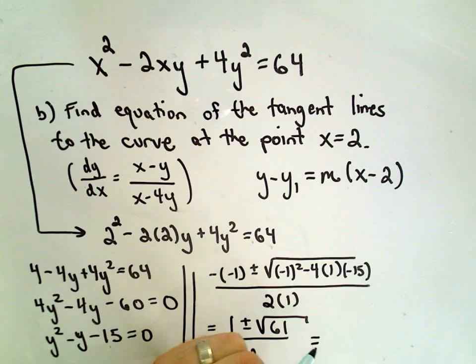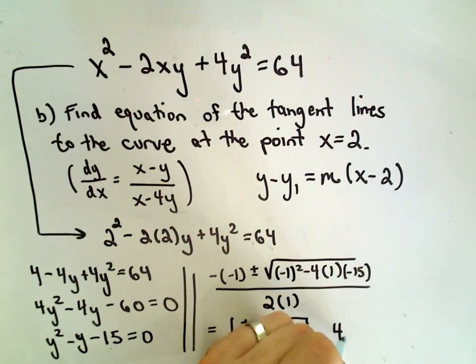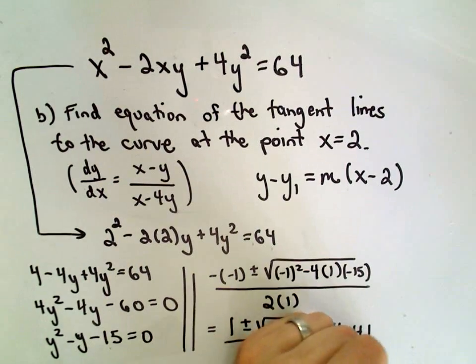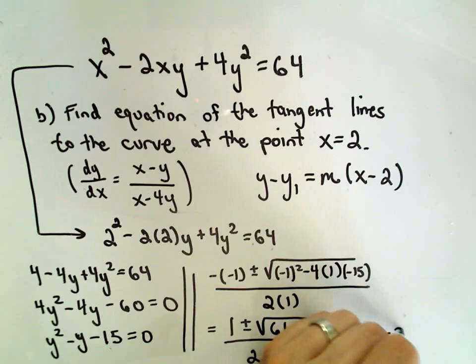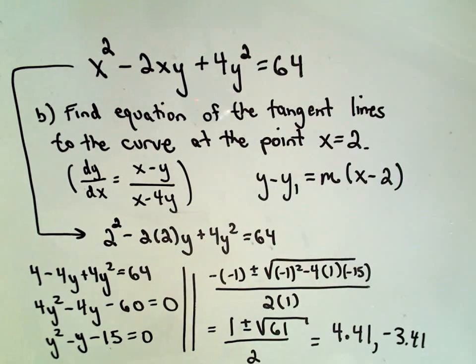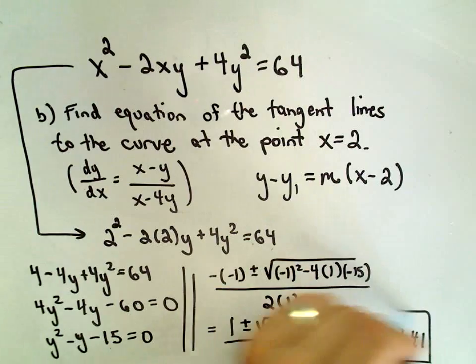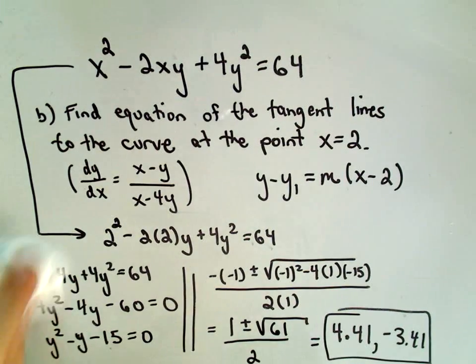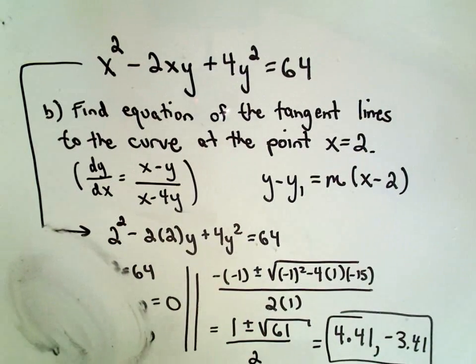If you plug these into a calculator, so again, you're allowed to use a calculator on this portion. I'm rounding and getting 4.41 and also negative 3.41. Okay, so now I have the y values that go with x equals 2. All right, so let's give ourselves a little more room here.